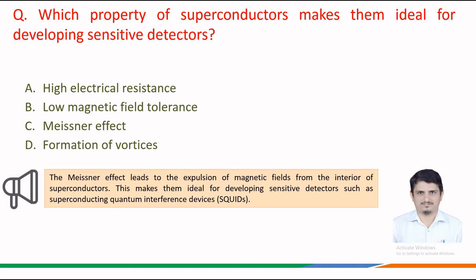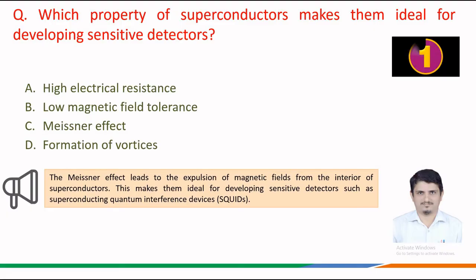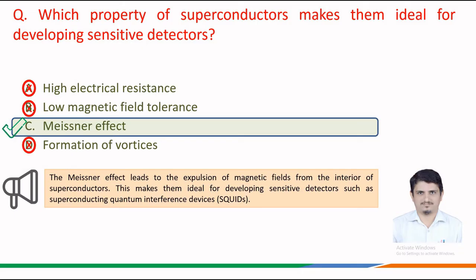To answer this question correctly, we must recall that the Meissner effect leads to the expulsion of magnetic fields from the interior of the superconductor. This makes them ideal for developing sensitive detectors, such as the superconducting quantum interference device, famously known as SQUIDs. Therefore, the correct answer is option c — the Meissner effect.